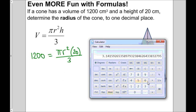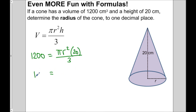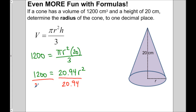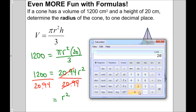Pi times 20 divided by 3 becomes 20.94. So the equation is 1,200 equals 20.94 times r squared. Since 20.94 is multiplying r squared, I divide both sides by 20.94. The 20.94s divide out, leaving r squared equal to 1,200 divided by 20.94, which is 57.31.